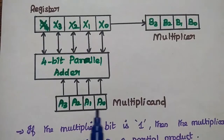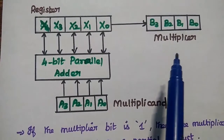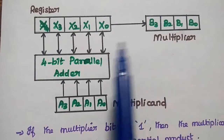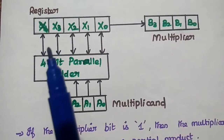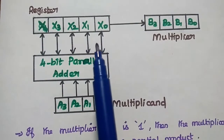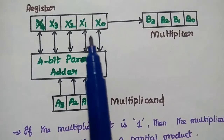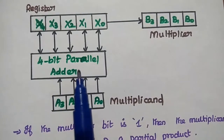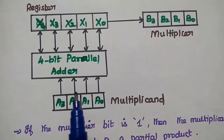The multiplicand is stored in the A register, and the multiplier is stored in the B register. The X register — X0, X1, X2, X3, X4 — represents the final output. Here we are going to use a 4-bit parallel adder to add all the partial products.